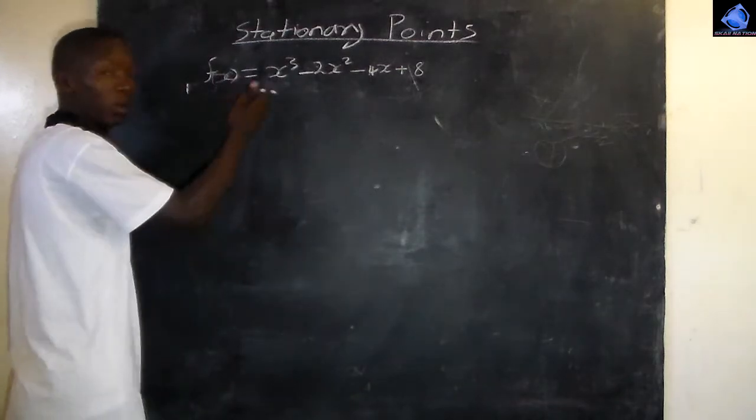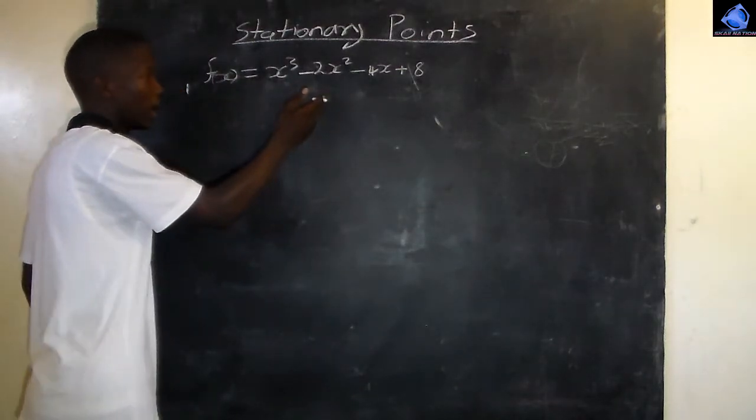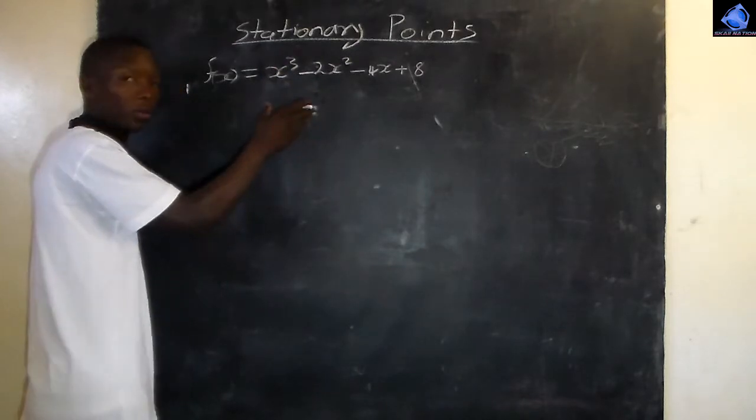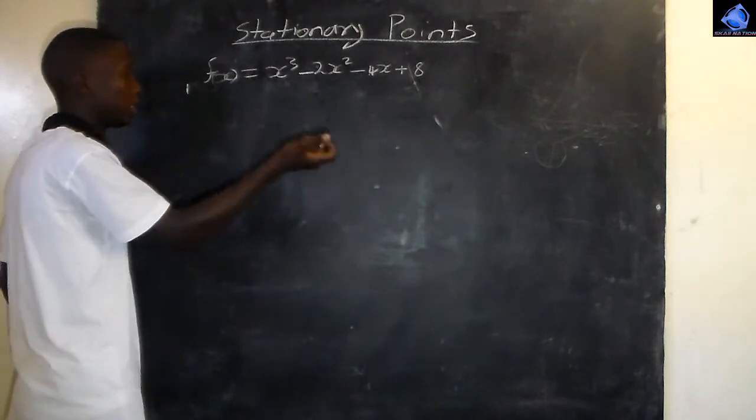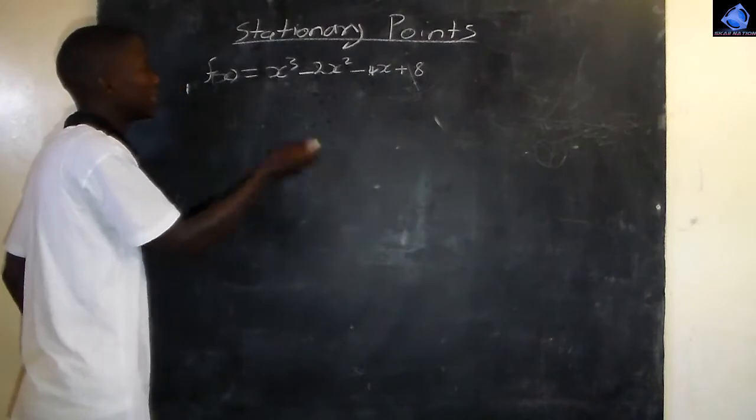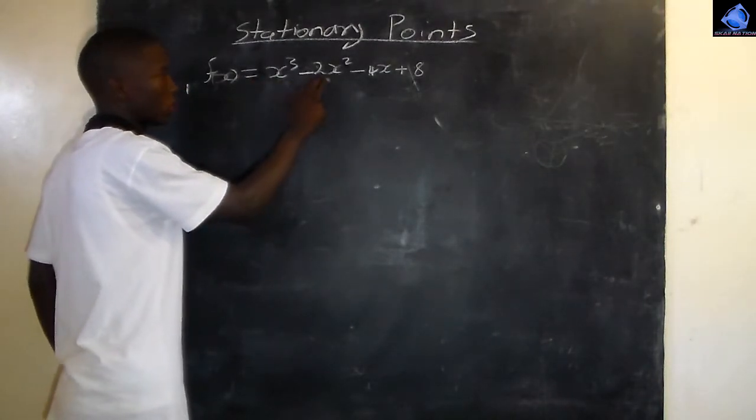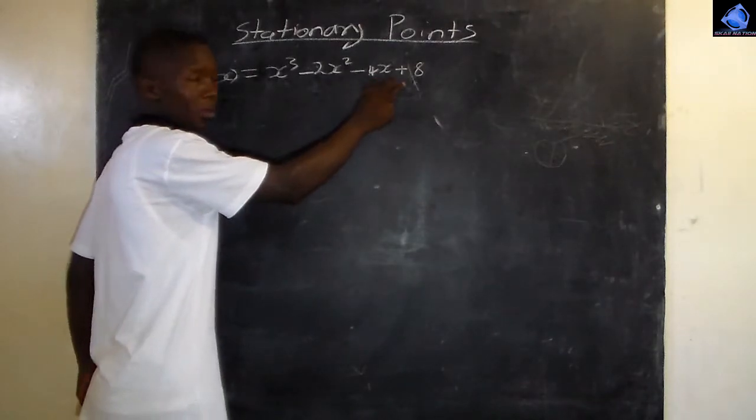Let's talk about the equation. F of x equals x cubed minus 2x squared minus 4x plus 8.